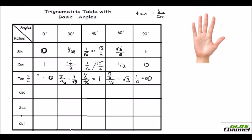The other three ratios are very easy. Cosecant is the reciprocal of sine, so just flip each sine value. Cosecant 0° = 1/0, which is infinity. Cosecant 30° = 2. Cosecant 45° = √2. Cosecant 60° = 2/√3. And cosecant 90° = 1/1 = 1.